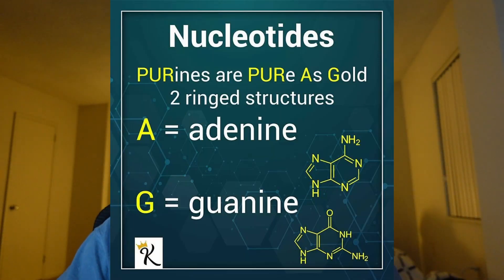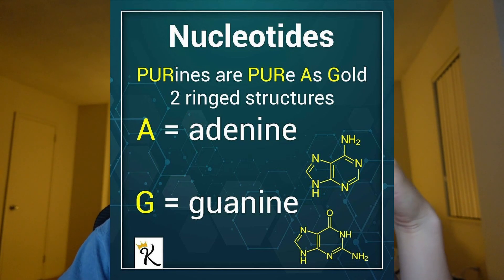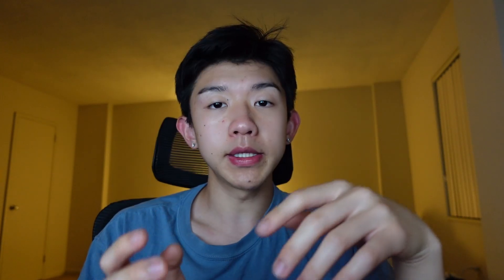At number four, I have the acronym PURE AS GOLD, and this differentiates purines from pyrimidines. This is helpful because if you remember your purines as adenine and guanine, you can simply remember your pyrimidines as the other three. I originally learned this through my biochemistry class — it's fairly common, but most people should know it.